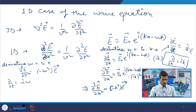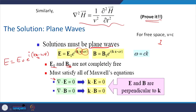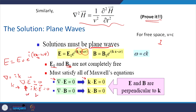When solving Maxwell's equations with these solutions, del dot E equals 0 means ik dot E equals 0, since del equals ik. This implies k dot E equals 0. Similarly, k dot B equals 0. This means E and k are perpendicular to each other, and B and k are also perpendicular to each other.